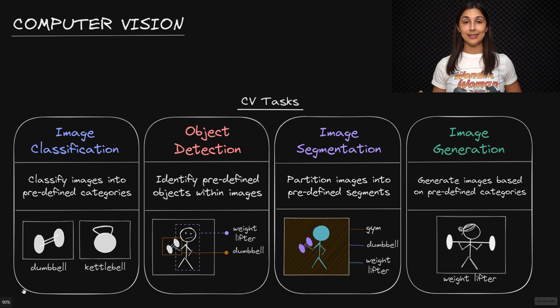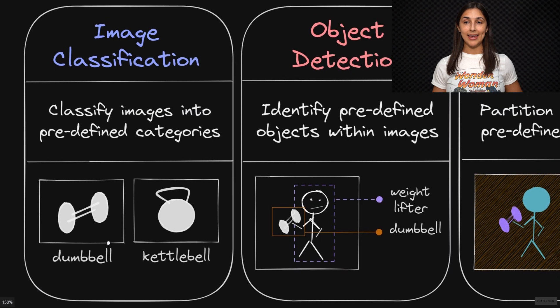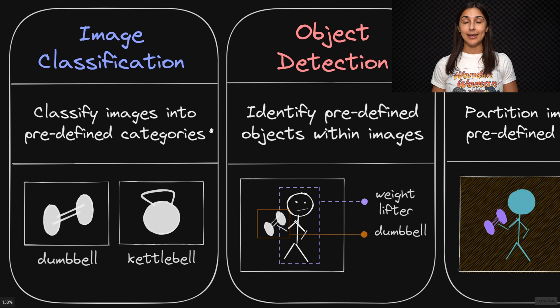All of the tasks listed here have made great strides through the use and application of deep learning algorithms or artificial neural networks. With the first task listed out here, we have image classification.